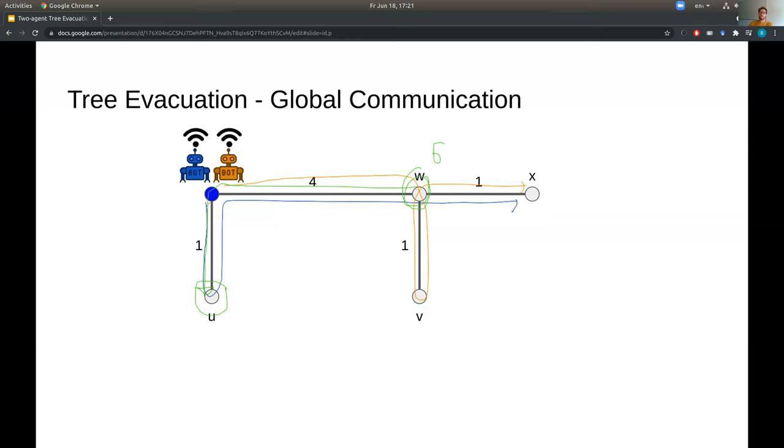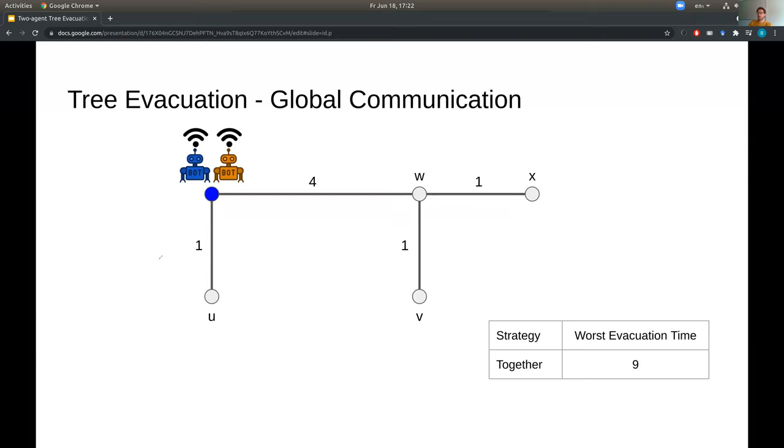So now what if we equip our robots with global communication? So now they can communicate wherever they are in the graph. Moreover, we allow for partially traversing edges. So if a robot is in the middle of traversing an edge when it finds out there's an exit in the other direction, then it can simply turn around and head straight for the exit.